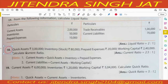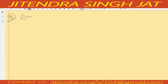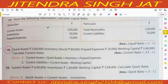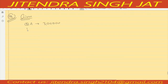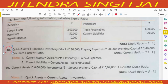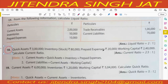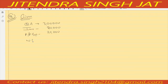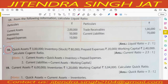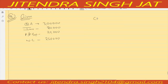Question number 18. Quick assets are given as 3 lakh, inventory is given as 80,000, prepaid expenses is given as 20,000, and working capital is given as 2 lakh 40,000. Calculate current ratio.